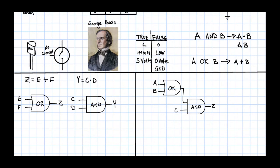When the output of one logic gate is connected to the input of another logic gate, we call that a logic network. For example, in this logic network, the output of the OR gate becomes one of the inputs to the AND gate.